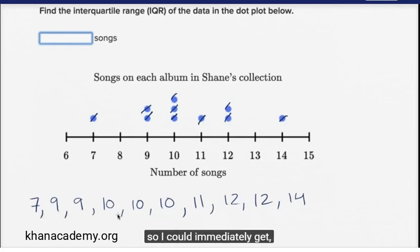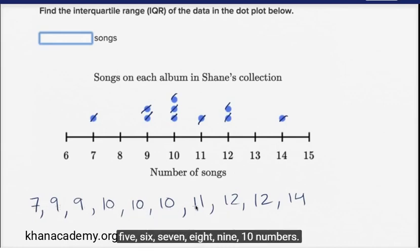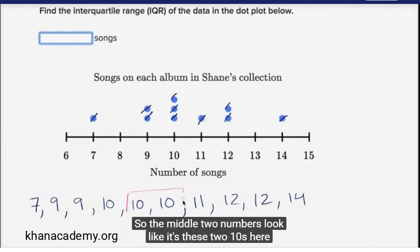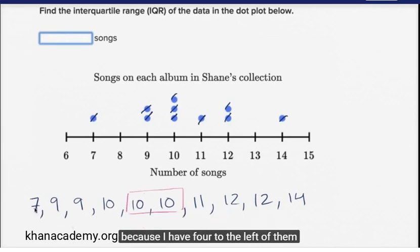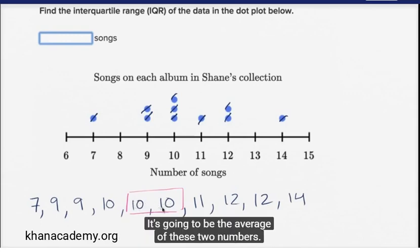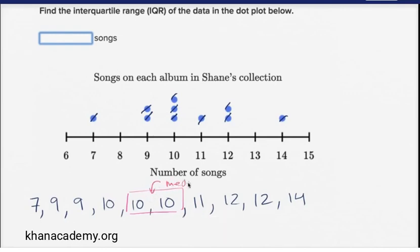So I can immediately start calculating the median. I have ten numbers — an even number of numbers. So to calculate the median, I'm going to have to look at the middle two numbers. The middle two numbers are these two tens, because I have four to the left of them and four to the right of them. Since I'm calculating the median using two numbers, it's going to be the average of ten and ten, which is just ten. So the median is going to be ten.